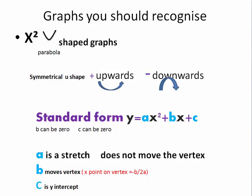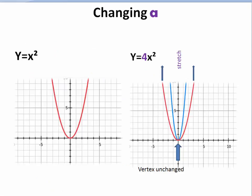A is a stretch, it doesn't move the vertex. b moves the vertex and c is the y-intercept. Here we have a graph of y equals x squared. A smooth u shape goes through the point 0, 0. And if we see where we plot the points, so we have 2 here as the x and the y will be 4. And it's symmetrical about the y-axis.